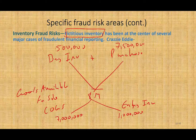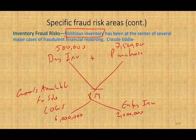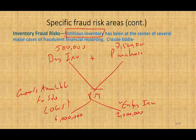Now bear in mind, if you claim to have $2 million of inventory rather than $1 million, your cost of goods sold becomes $6 million. It's a zero-sum game — when one goes up, the other goes down. Inventory and cost of goods sold is like a seesaw. If we overstate ending inventory, cost of goods sold goes down. If we understate inventory, cost of goods sold will go up.